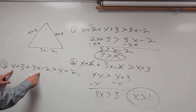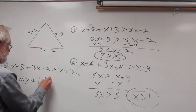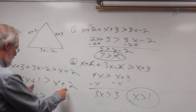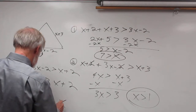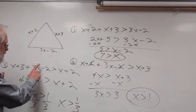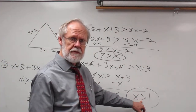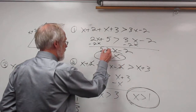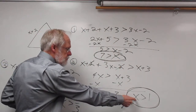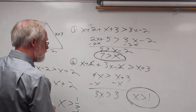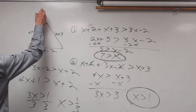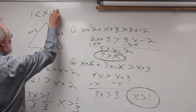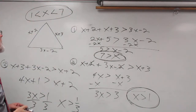Let's see what the third inequality gives. That's 4x plus 1 must be greater than x plus 2. Subtracting x gives 3x plus 1 must be greater than 2, so 3x must be greater than 1, and x must be greater than one third. Since x must be greater than 1 is more restrictive than x must be greater than one third, we use the more restrictive condition. The final answer is x must be greater than 1 and less than 7.